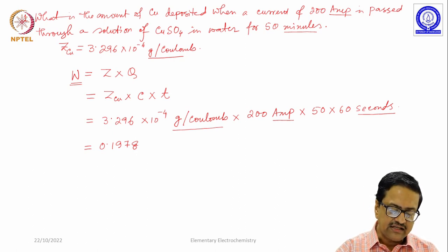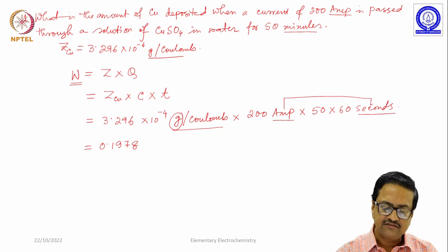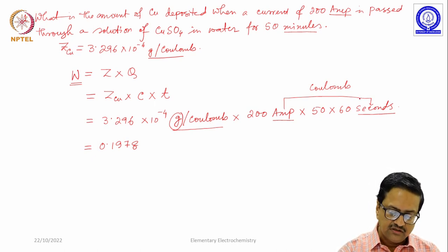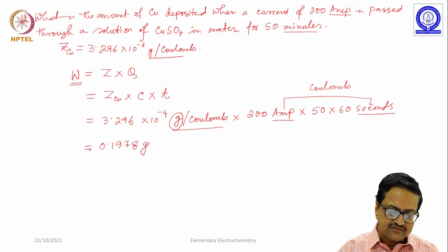See here the z has unit gram, this is ampere second per coulomb and we know that ampere times second is coulomb. We have coulomb in the numerator and per coulomb in the denominator, so the unit coulomb is removed and the unit gram stays. So the answer is 0.1978 gram.